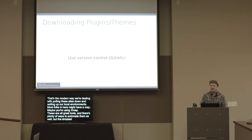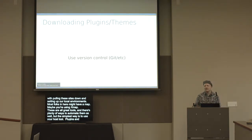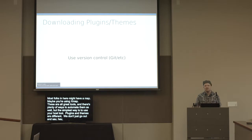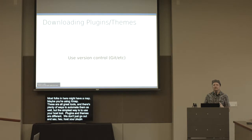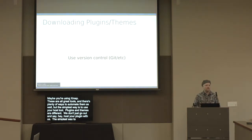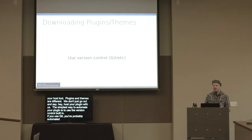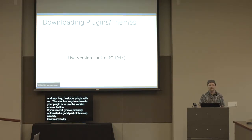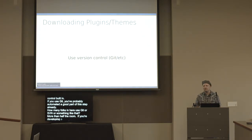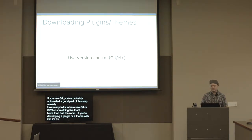Plugins and themes are a little different. WP Engine, Pantheon, and Flywheel don't just hand you a plugin — you're hosting a website, not a plugin. The simplest way to automate plugin development, pulling, pushing, and cloning locally, is to use version control. If you use Git, you've probably automated a good part of this already. More than half the room uses Git or SVN, and if you're developing a plugin or theme with Git, that's by far the most efficient approach.